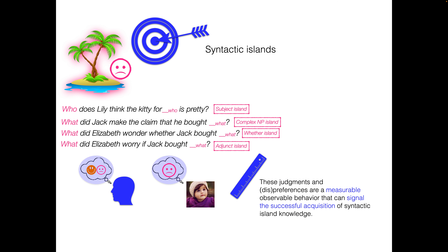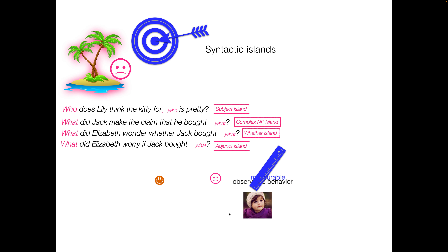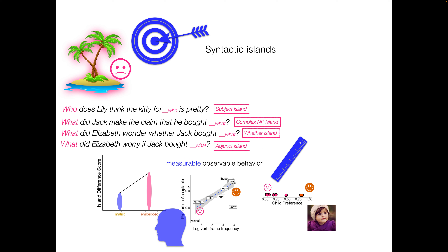These judgments and dispreferences are a measurable, observable behavior that can signal the successful acquisition of syntactic island knowledge. If you have these preferences and these judgments, then you've internalized whatever it is that allows you to demonstrate human-like behavior. The particular signals we're going to talk about show up in these patterns — broadly speaking — that we're looking for in order to capture these judgments and dispreferences. We'll walk through those in a little more detail in a moment.